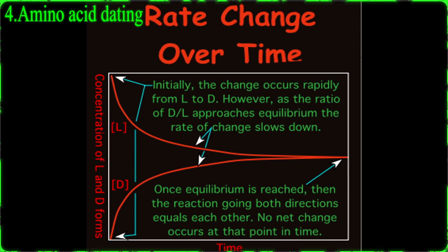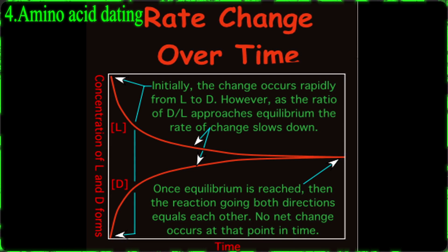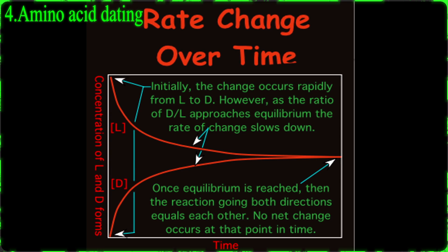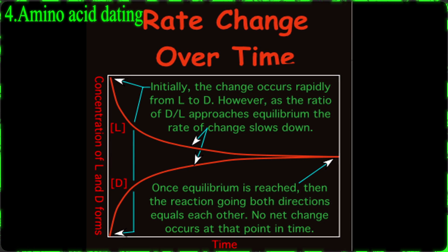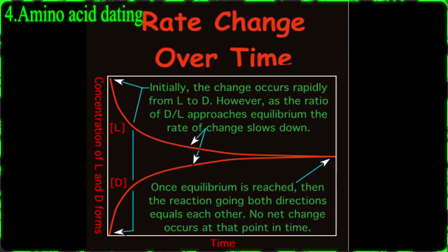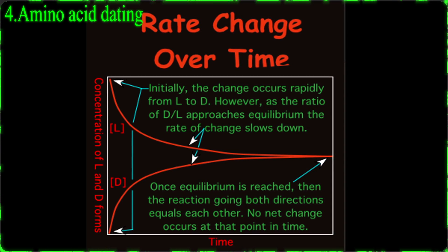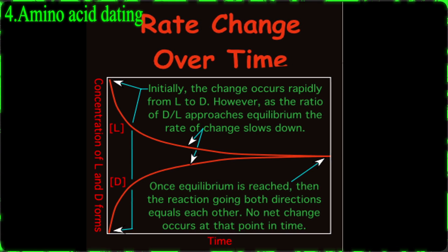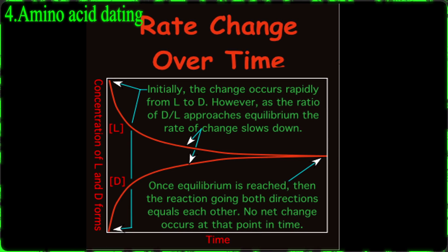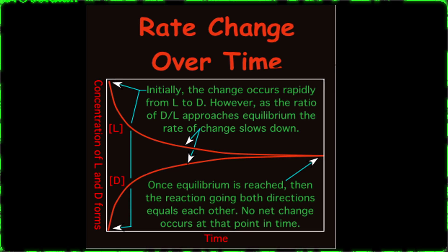When an organism dies, the control over the configuration of the amino acids ceases, and the ratio of D to L moves from a value near 0 towards an equilibrium value near 1. This process is known as racemization, and when measuring the ratio of D to L in a sample, it enables one to estimate how long ago a specimen died.